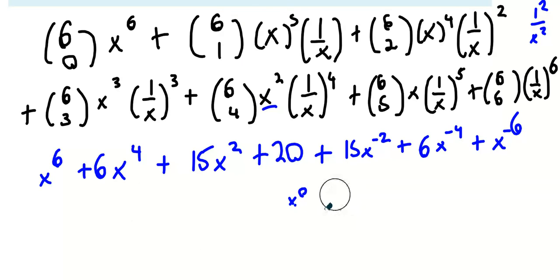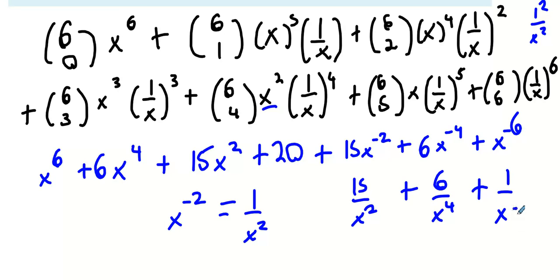Now, if the book has it written slightly differently, some of you just don't know the negative power rule. x minus 2 actually means 1 over x squared. So that could be written as 15 over x squared. Likewise, this could be written as 6 over x4. And this last one could be written as 1 over x6. So both of them should be acceptable.